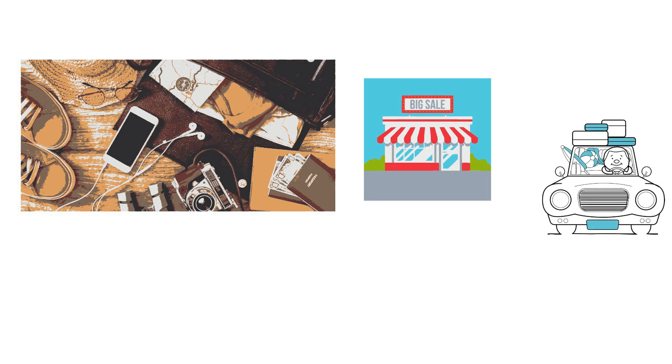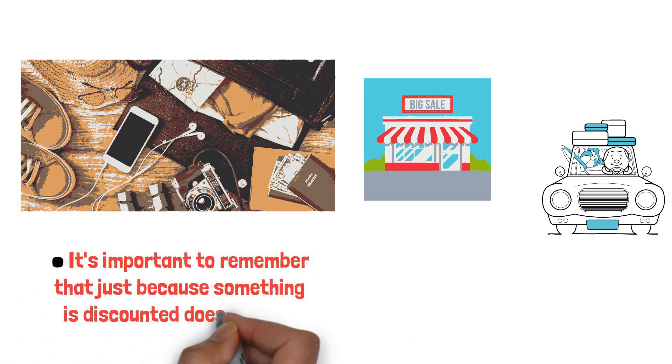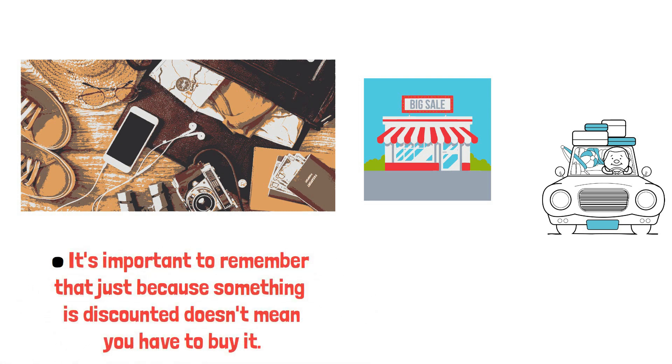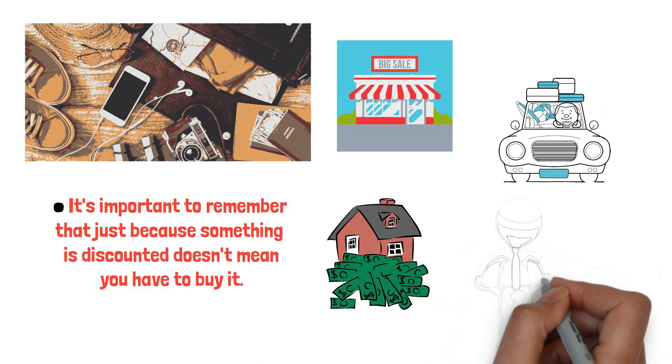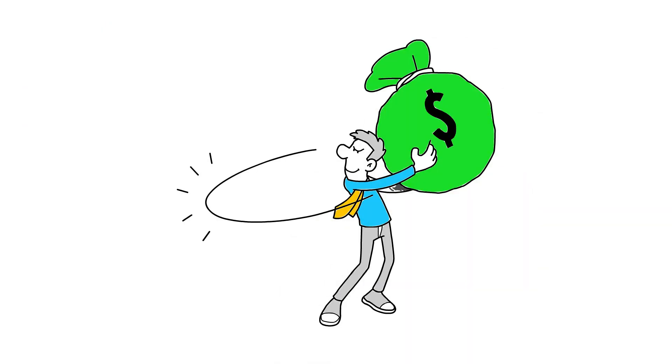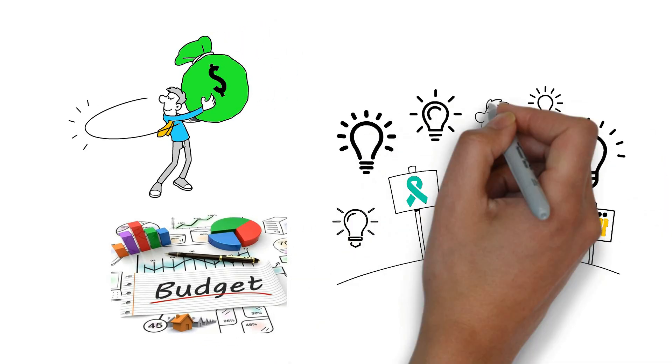For instance, you might get extra clothes or gadgets than necessary simply because they're discounted, or you might take an expensive vacation trip without noticing. It's important to remember that just because something is discounted doesn't mean you have to buy it. Engaging in excessive buying can quickly derail your financial stability. To regain control of your finances, it's crucial to start tracking your expenses and creating that budget. These practices will help you stay mindful of your spending habits and make wiser decisions with your money.